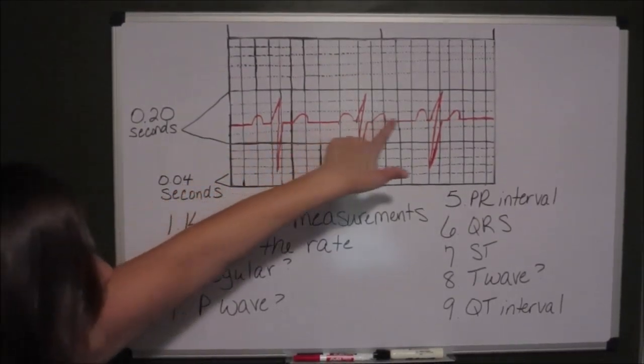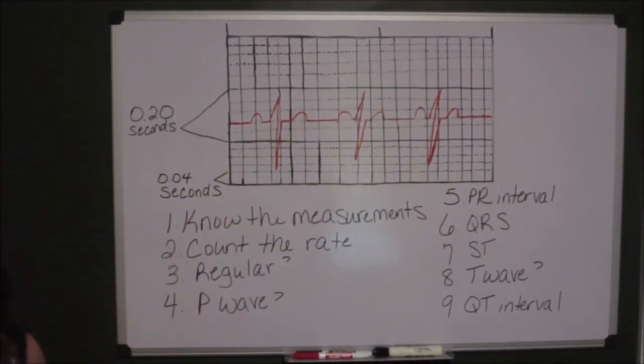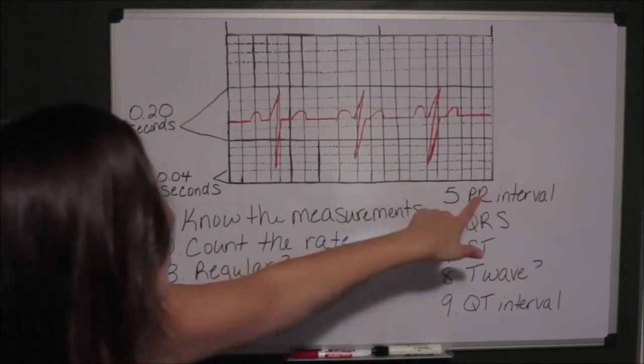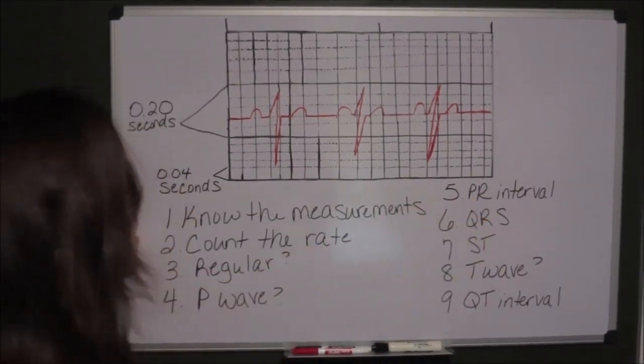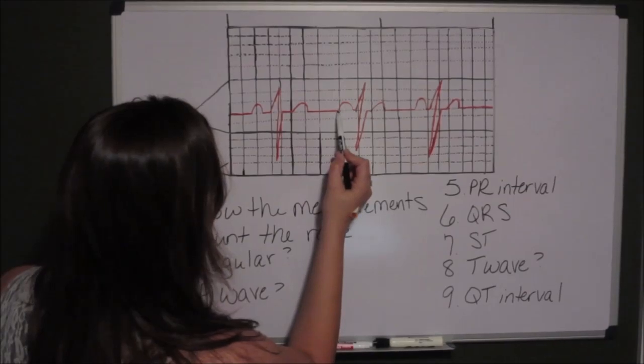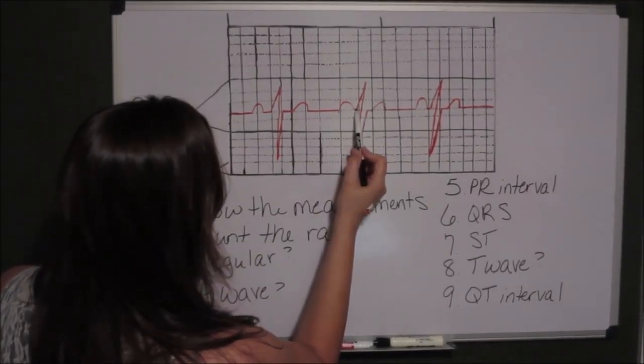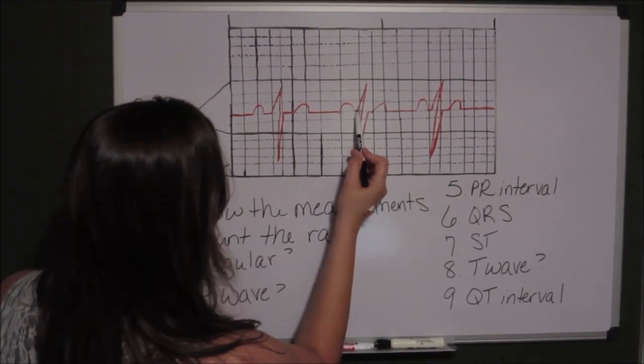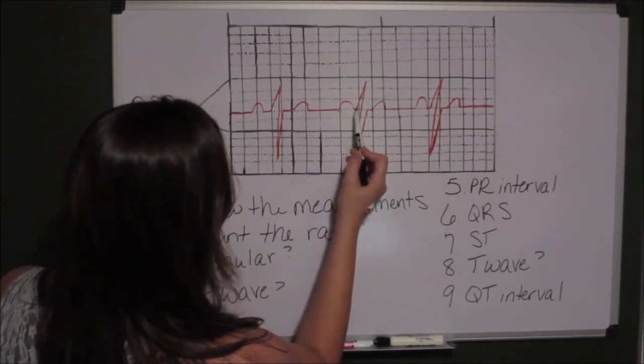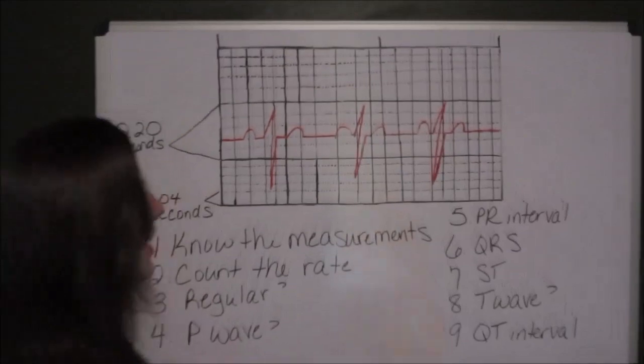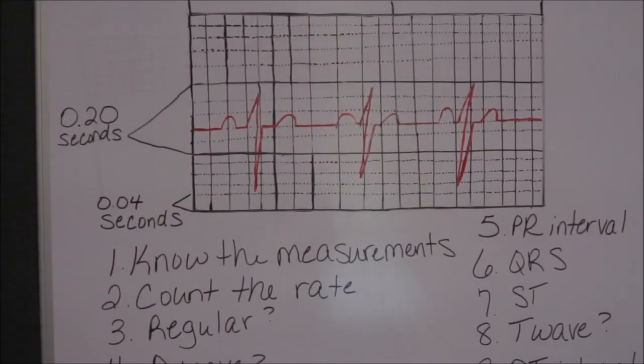P wave. Do you have a P wave for each complex? Measure the PR interval. PR Interval starts here, where your P wave leaves the baseline, to where your Q wave leaves the baseline. PR Interval is 1 box, which measures 0.04 seconds.